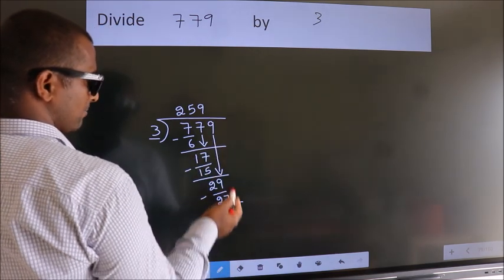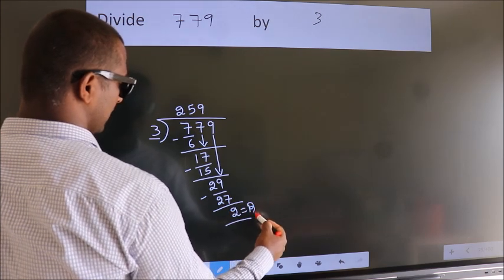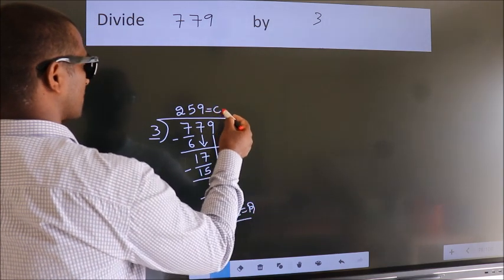No more numbers to bring it down. So we stop here. This is our remainder. This is our quotient.